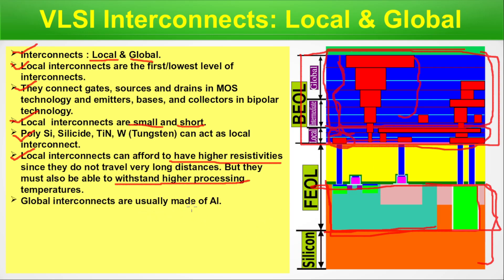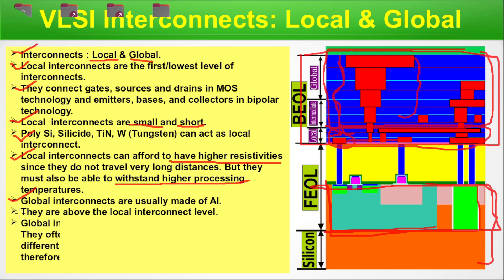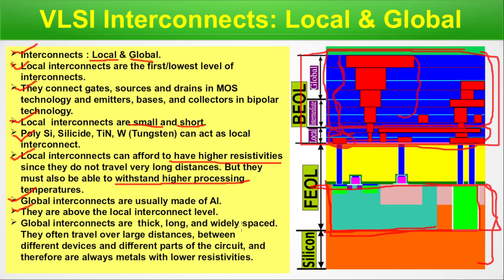Global interconnects are usually made of aluminum. They are above local interconnects, and are thick, long, and widely spaced. They often travel over large distances between different devices and different parts of the circuit. Therefore they are always metal with lower resistivity, since if resistivity is higher, the material will resist the current and generate heat over the longer run.